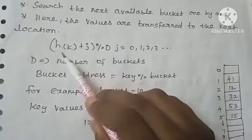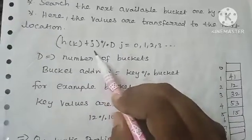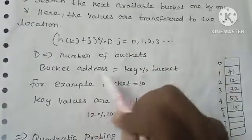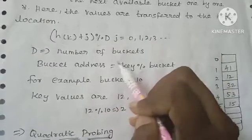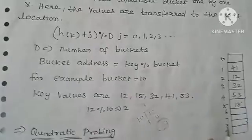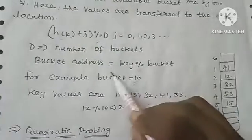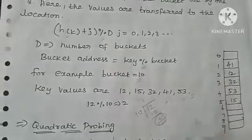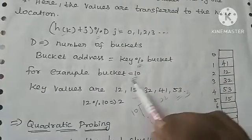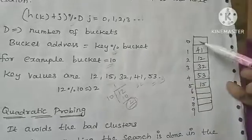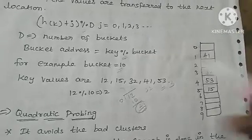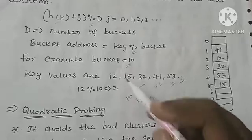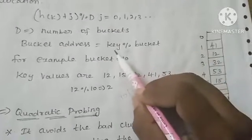The formula for linear probing is: h(k) = (hash of key + j) mod d, where d is the number of buckets, which is the size of the table. The bucket address is calculated as: key modulus bucket size. For example, using a bucket size of 10, which means positions 0 to 9.